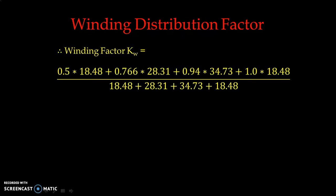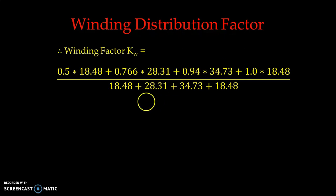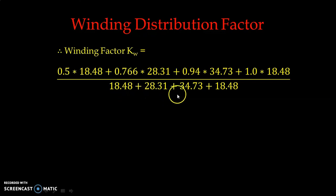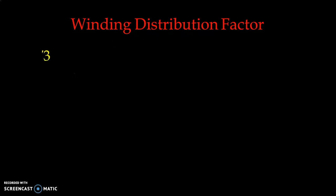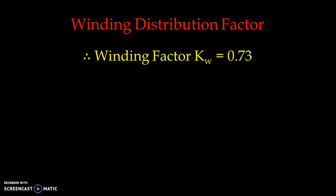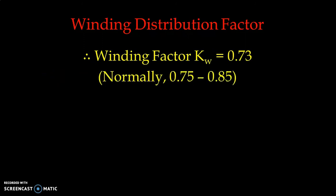Substituting the exact percentage values: (0.5 × 18.48 + 0.766 × 28.31 + 0.94 × 34.73 + 1 × 18.48) divided by (18.48 + 28.31 + 34.73 + 18.48). Simplifying, Kw = 0.73. Normally we take 0.75 to 0.85 in the case of single phase induction motor winding factor.